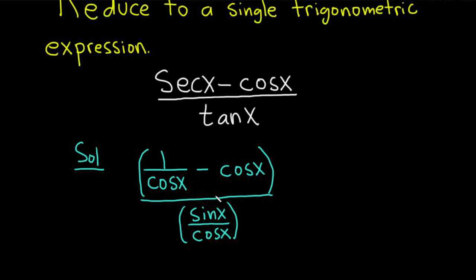In order to write this as a single trig expression, we want to clean up this complex fraction. You'll notice there's a cosine x here and 1 down here. So we can multiply by 1 in a clever way. This is cosine x over cosine x.